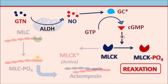Thereby nitroglycerin can reduce the preload and afterload, reduce the cardiac work, and increase the coronary oxygen supply. Nitroglycerin produces vasodilatation of both systemic blood vessels as well as coronary blood vessels.